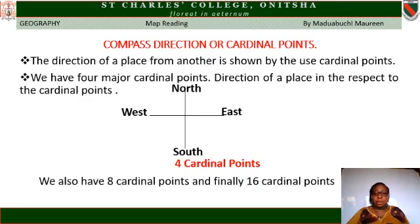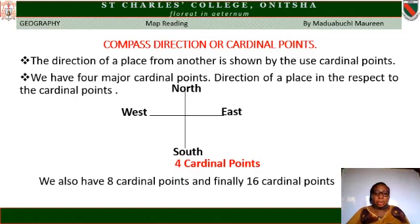Compass Direction or Cardinal Points. The direction of a place from another is shown by the use of cardinal points. We have 4 major cardinal points. North, South, East, and West — these are the 4 major cardinal points.